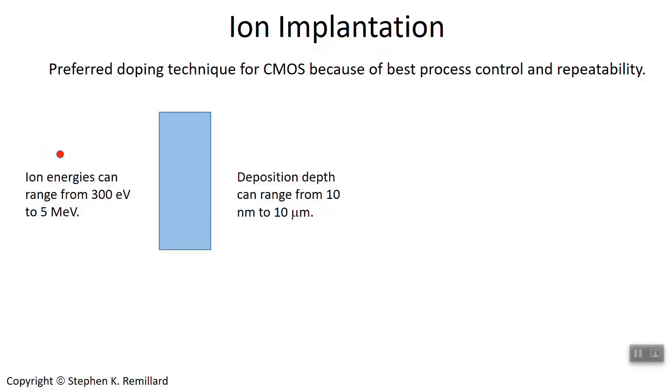Dopant diffusion is not the only way to get dopants into the interior of a semiconductor. Ion implantation can be a much better way. It also allows you to implant dopants deep under the surface in a region beneath a region where you don't want those dopants.